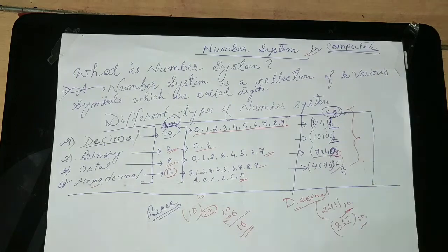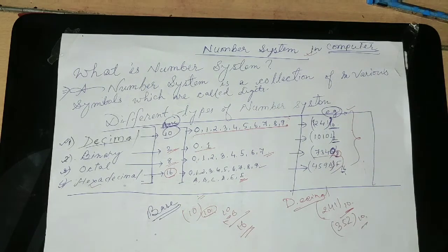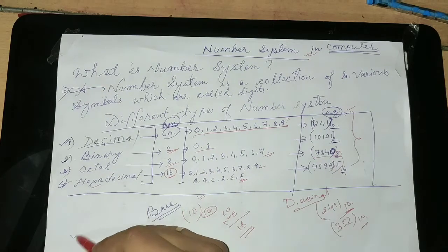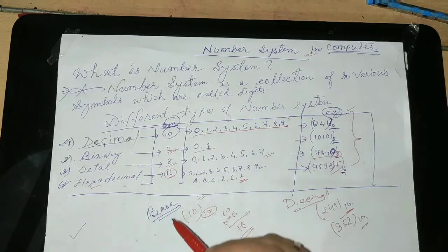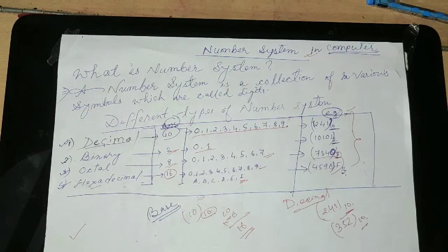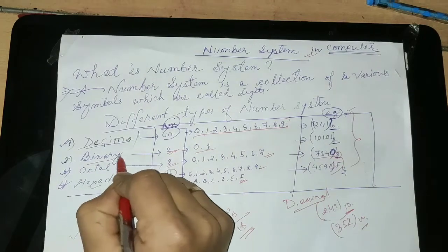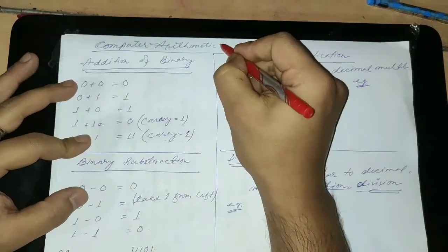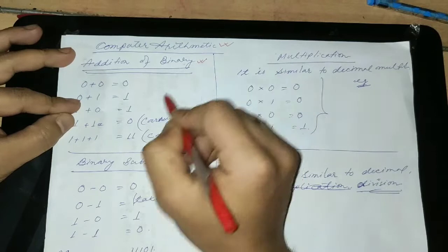I hope you all understood it very nicely. You can take a screenshot of this PDF if you like it. Next, we have completed these 4 different number systems. Now, how can we calculate? That means, how to do — at first we will learn the binary number system. So, in binary computer arithmetic, how to do addition in binary.